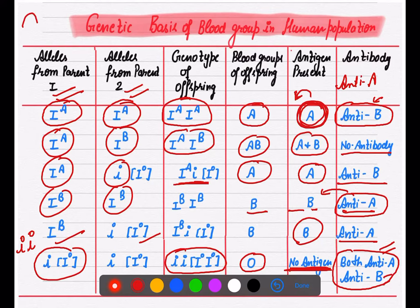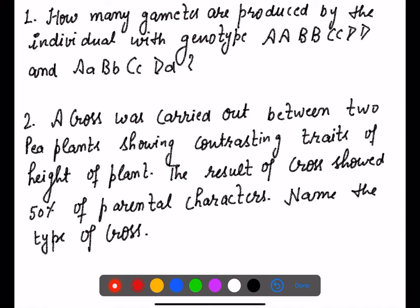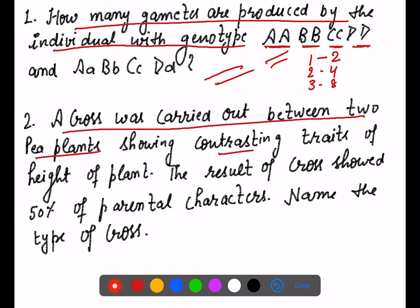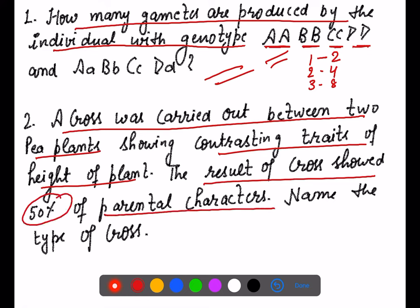I am leaving you with two practice questions. If you watched the video carefully you should be able to answer them. First: how many gametes are produced by an individual with genotype AaBbCcDd? Apply the formula discussed today. Second: a cross between two plants showing contrasting traits of height gives 50% parental characters — name the type of cross we discussed as our first topic today.